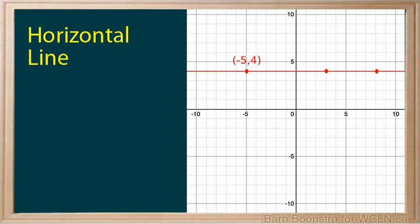Let's put three points on the line: negative 5, 4; 3, 4; and 8, 4. You can see that y always has the value of 4, and x can take any value. The equation of the horizontal line is y equals 4.